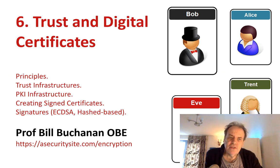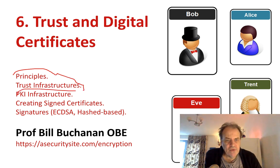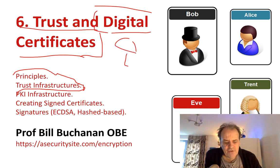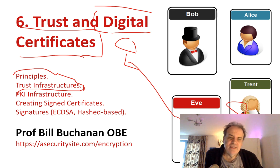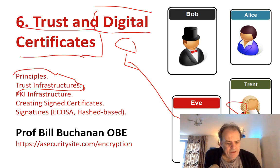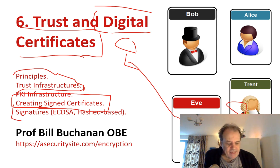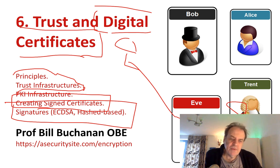In Unit 6 we look at trust and digital certificates, covering basic principles and what our trust infrastructure looks like. We'll examine the PKI infrastructure, typically around digital certificates, and how the trust infrastructure that Trent sets up allows us to trust involved entities. We'll also do practical work around generating self-signed certificates and look at basic signatures including hash-based ones and elliptic curve DSA.